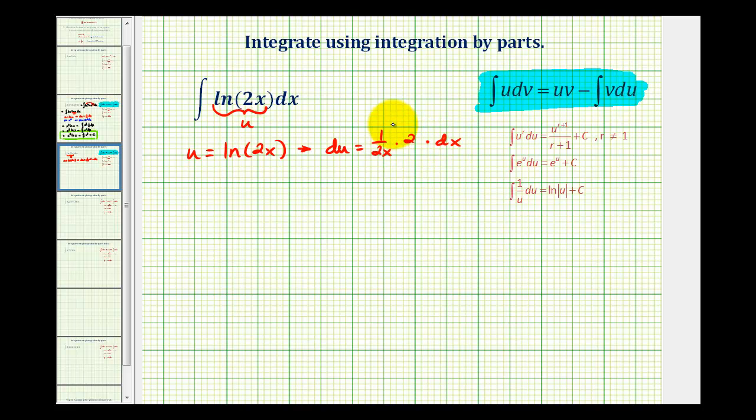We had to apply the chain rule here. But notice how these 2's simplify out. So differential u is just 1 over x dx.